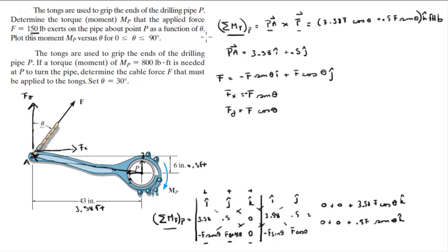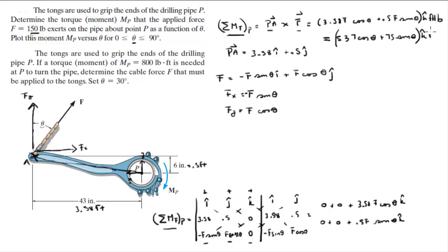So the moment comes out to be: (3.58F cosine(theta) + 0.5F sine(theta)) k foot-pounds. To express it as a function of theta, plug in F = 150 pounds and you get: (537 cosine(theta) + 75 sine(theta)) k foot-pounds. This is the answer to the first part.